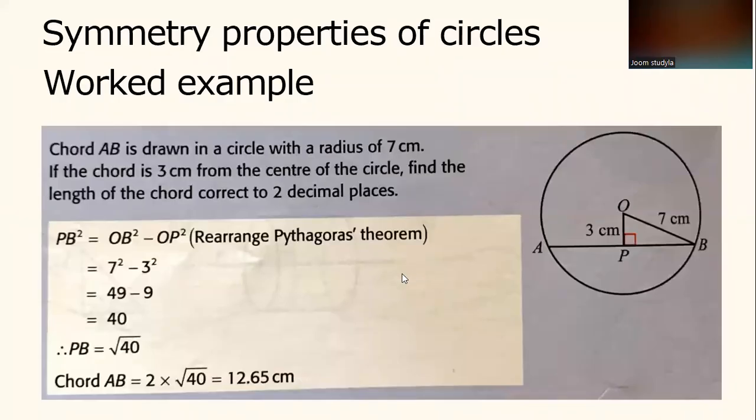Symmetry properties of circles worked example. Chord AB is drawn in a circle with a radius of 7 cm. If the chord is 3 cm from the center of the circle, find the length of the chord correct to two decimal places.